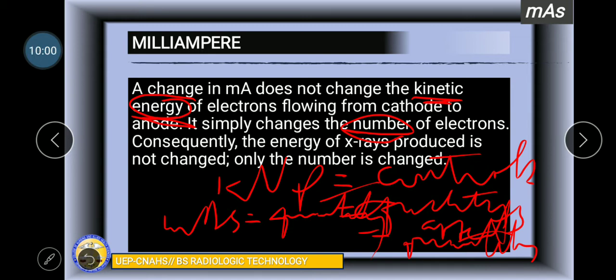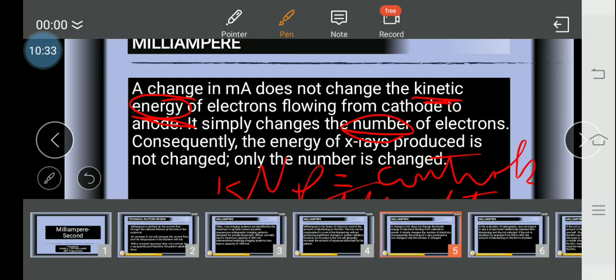KVP can control the quality and at the same time affects the quantity. But mAs has nothing to do with quality. It only changes the number or the quantity of photons. So radiographic quality, the appearance of the film, is different from photon quality.